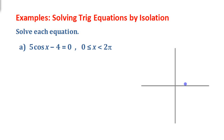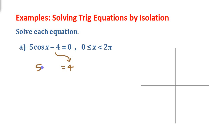In other words, we're looking for angles in standard position within one full counterclockwise rotation. To go with solving this, first isolate the trig function. I would start by moving that 4 to the other side: 5 cos x equals 4. If I divide both sides by 5, I'm going to get cos x equals 4 fifths.